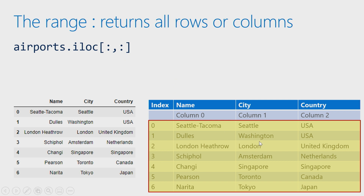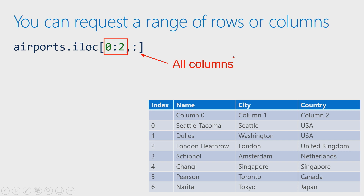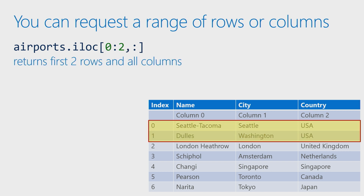So if I ran this, I'm going to get back that highlighted section — everything. If I said I only want the first two rows, so 0 and 1, stopping at index 2 but not including it, then I could specify that as my range. This is now going to indicate that we want back all of our columns. So I'll get back Seattle Tacoma, Seattle USA, and Dulles, Washington, USA — the first two rows and all columns. I could go the other direction as well, putting that range over on the column side to get back the first two columns — the name and the city.